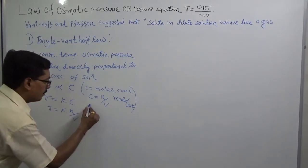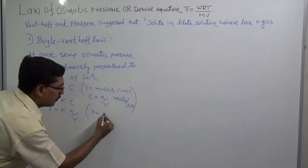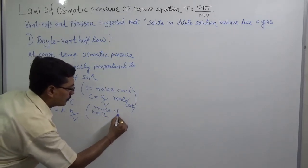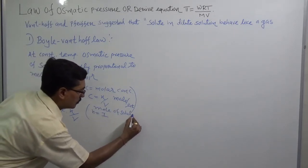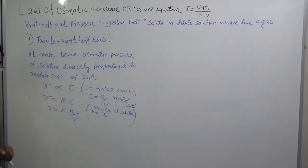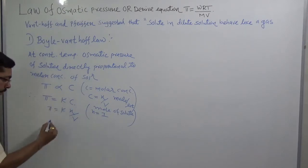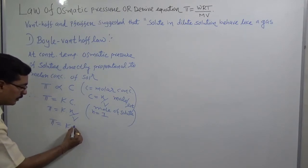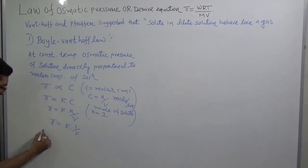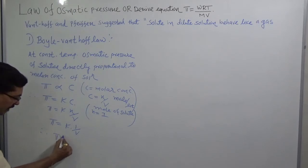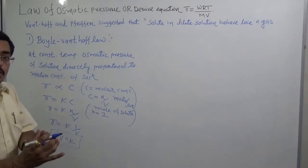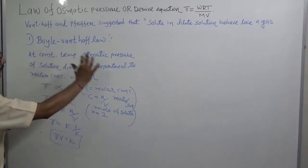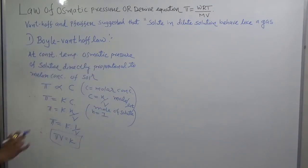Now suppose we take n equal to 1 mole of solute in the solution. Putting n equal to 1 in the equation, we get pi equals k times 1 upon V, or ultimately pi times V equals k, which is a constant. This is just like Boyle's law — PV equals constant — and here we get the van't Hoff equation pi times V equals constant. This is equation number one.